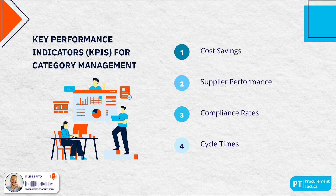Additional KPIs include compliance rates — tracking adherence to contracts and procurement policies to ensure everyone follows the rules — and cycle times, which monitor the time taken to complete procurement processes from order to delivery, with shorter cycle times indicating a more efficient process. These KPIs provide a clear picture of how well your category management strategies are working, showing where you excel and where there might be room for improvement.